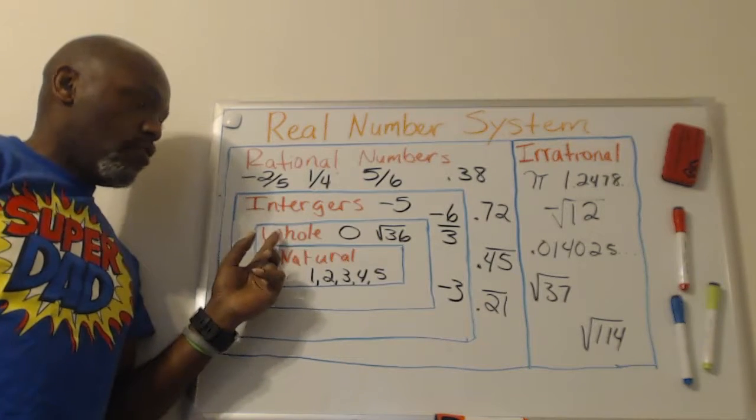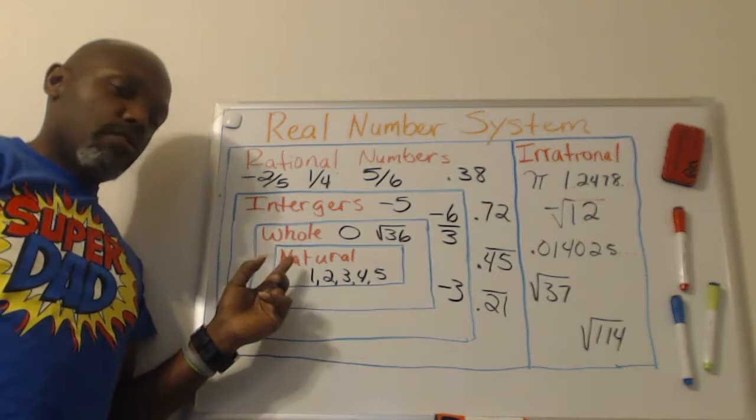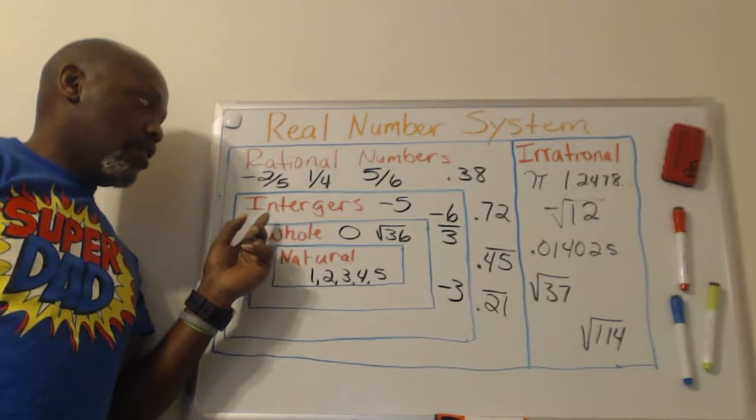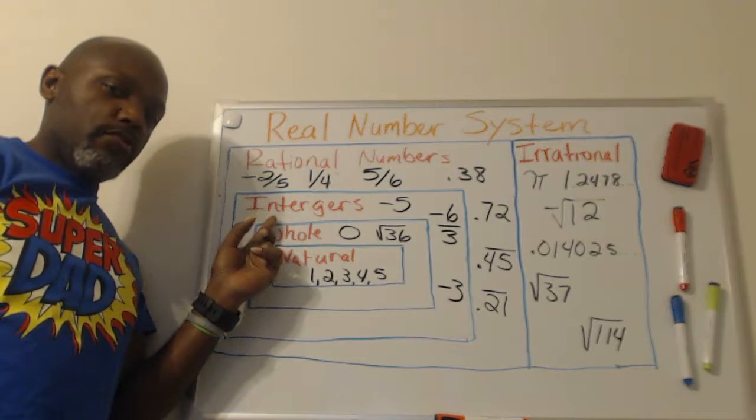An integer is not a whole number or a natural number. A natural number is a whole number, and it's also an integer. Whole numbers are also integers.